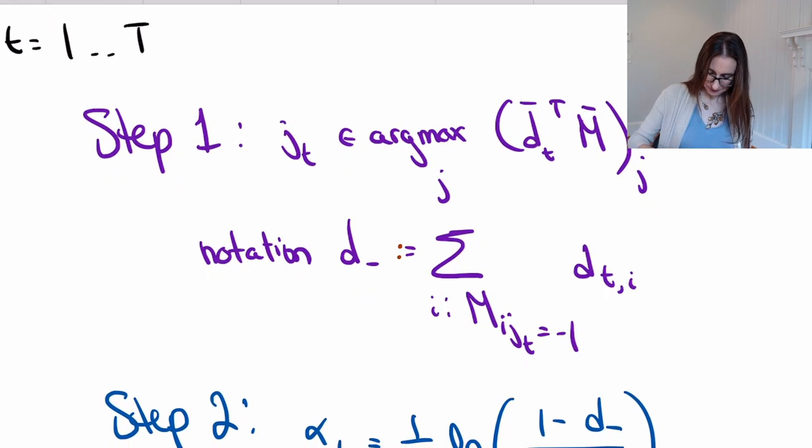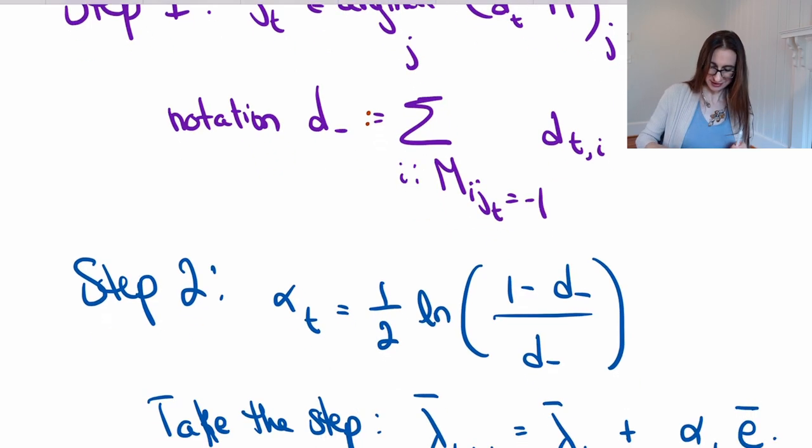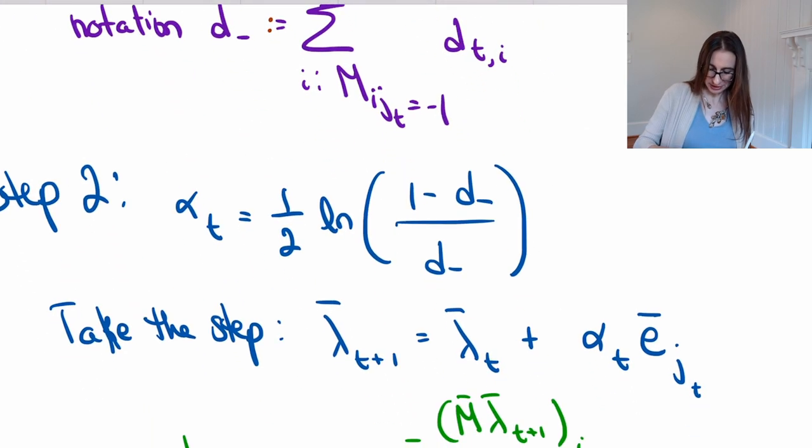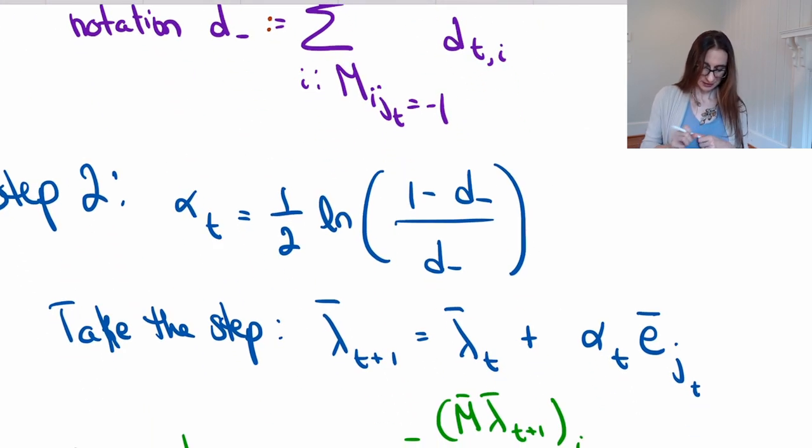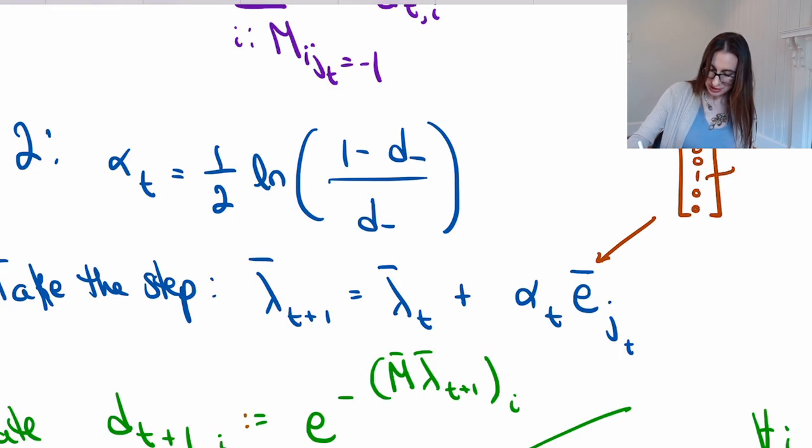Let me give you the notation for the sum of the weights of the misclassified points, which is d_t minus. Then how far we travel is alpha_t, which we derived earlier—that's this formula there. And now that we know which direction to travel in and how far to travel, we can actually take that step.